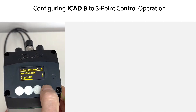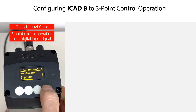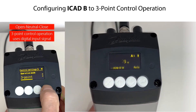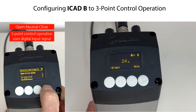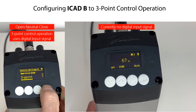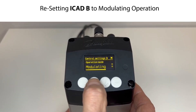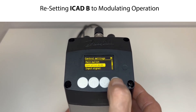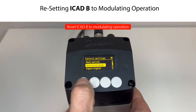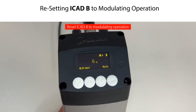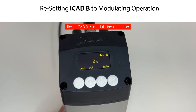Please note that the 3-point control mode — Open, Neutral, Close — is based on a digital input signal which increases or decreases the valve opening degree. As seen, the valve has now moved fully from 0% to 100% opening degree, because there is currently no digital input signal to the ICAD-B. Before you continue the ICAD-B configuration, we recommend that you reset the ICAD-B to Modulating Operation Mode, as shown here in the following sequence.